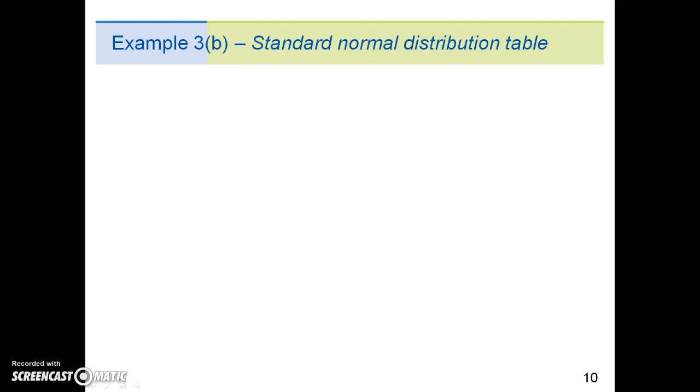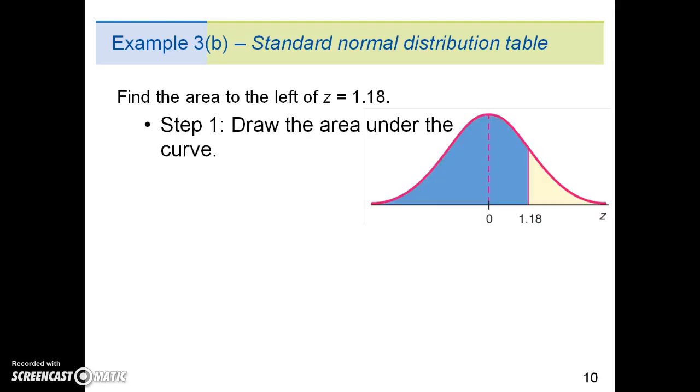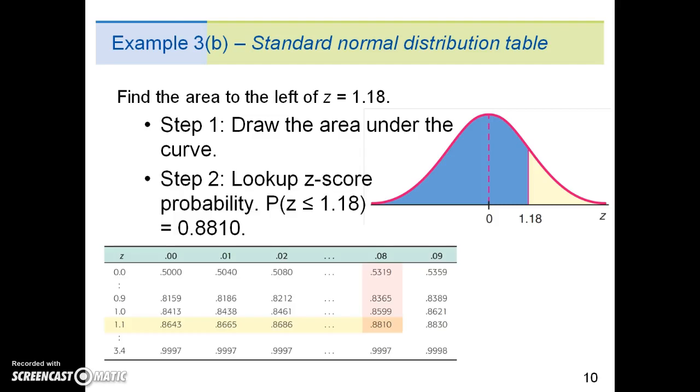Example 3b provides another example for using the standard normal distribution table in the back of the book. Let's say we want to find the area to the left of z = 1.18. Step one, we draw the area under the curve, just so we know what we're looking at. Step two, we look up the z-score probability, and this is where z ≤ 1.18 equals 0.8810.